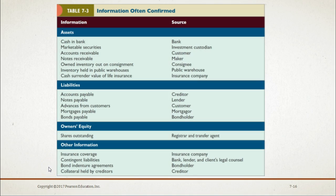Although confirmation is currently not required for any account other than accounts receivable, it is useful in verifying many types of information. Here we have the major types of information that are often confirmed in an audit along with the source of the confirmation. For example, to verify the cash surrender value of a life insurance policy, the source of confirmation would be the insurance company. Please read Table 7-3 on page 187 of your textbook.